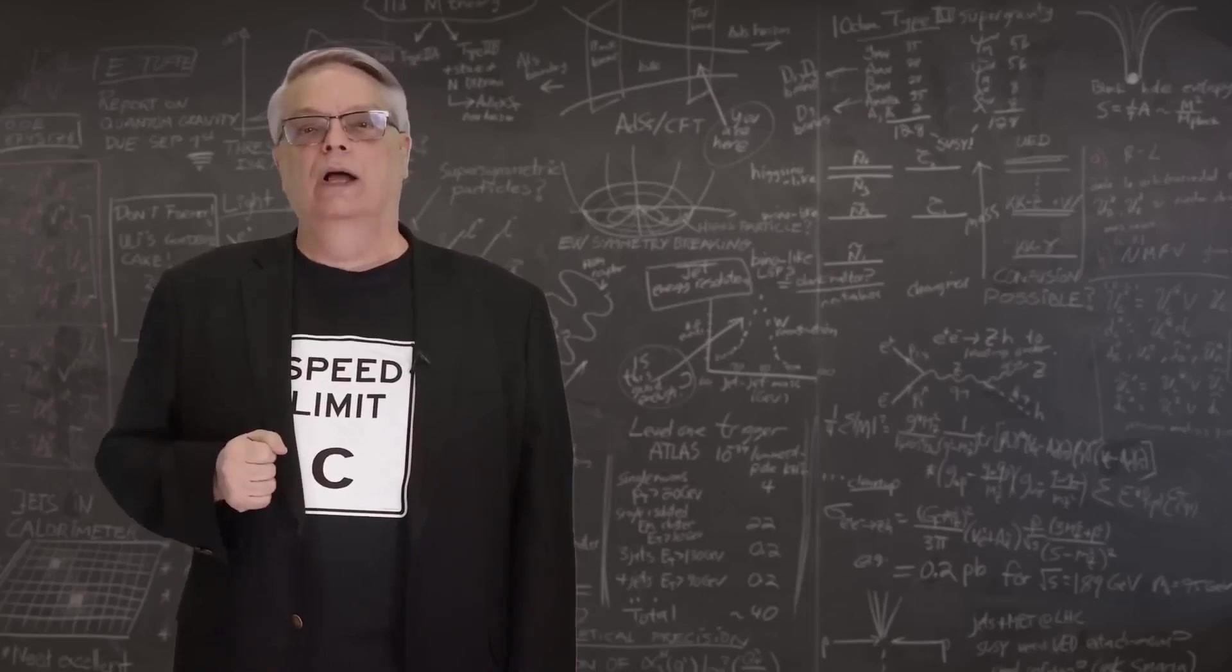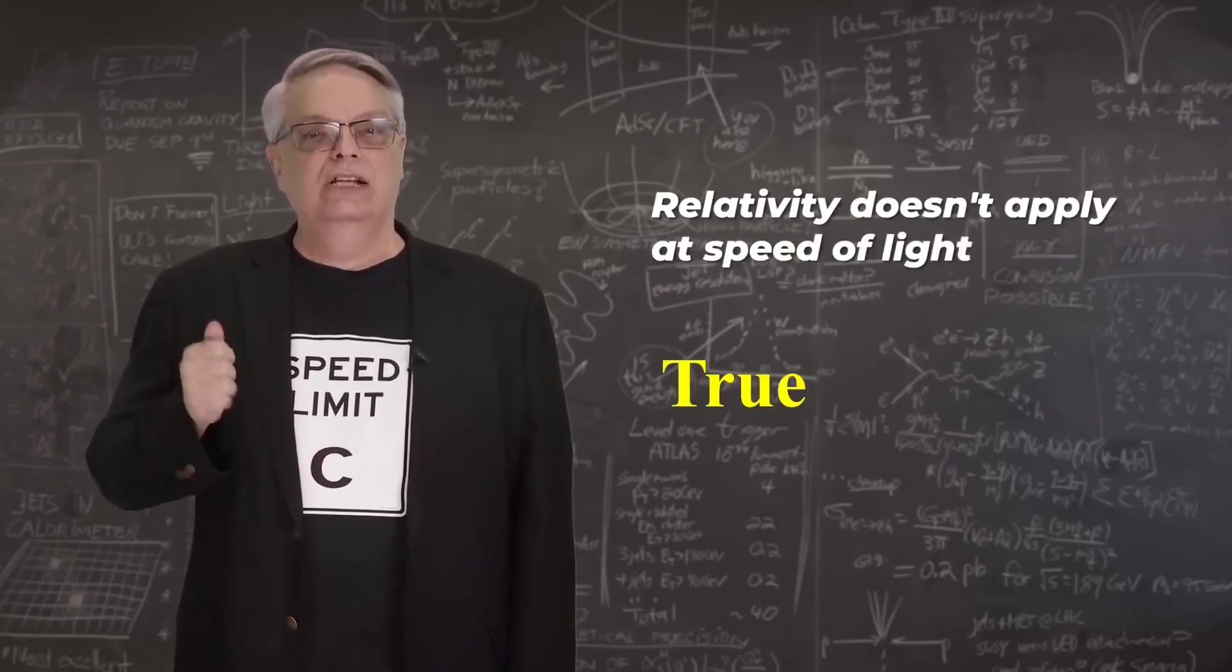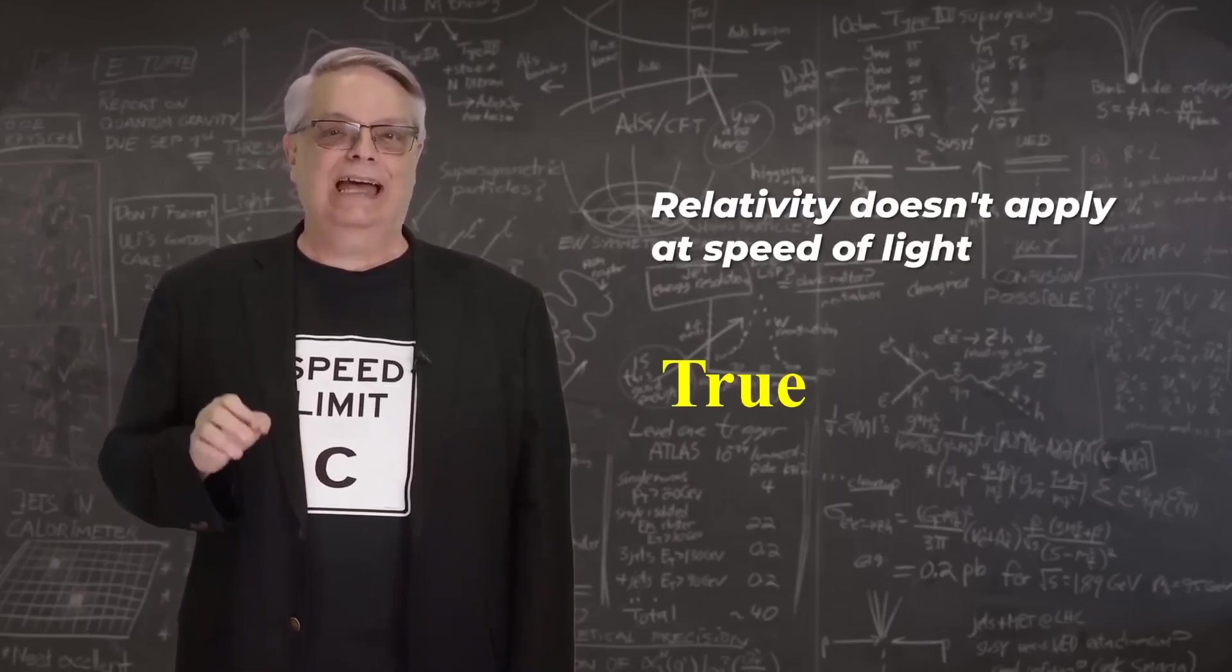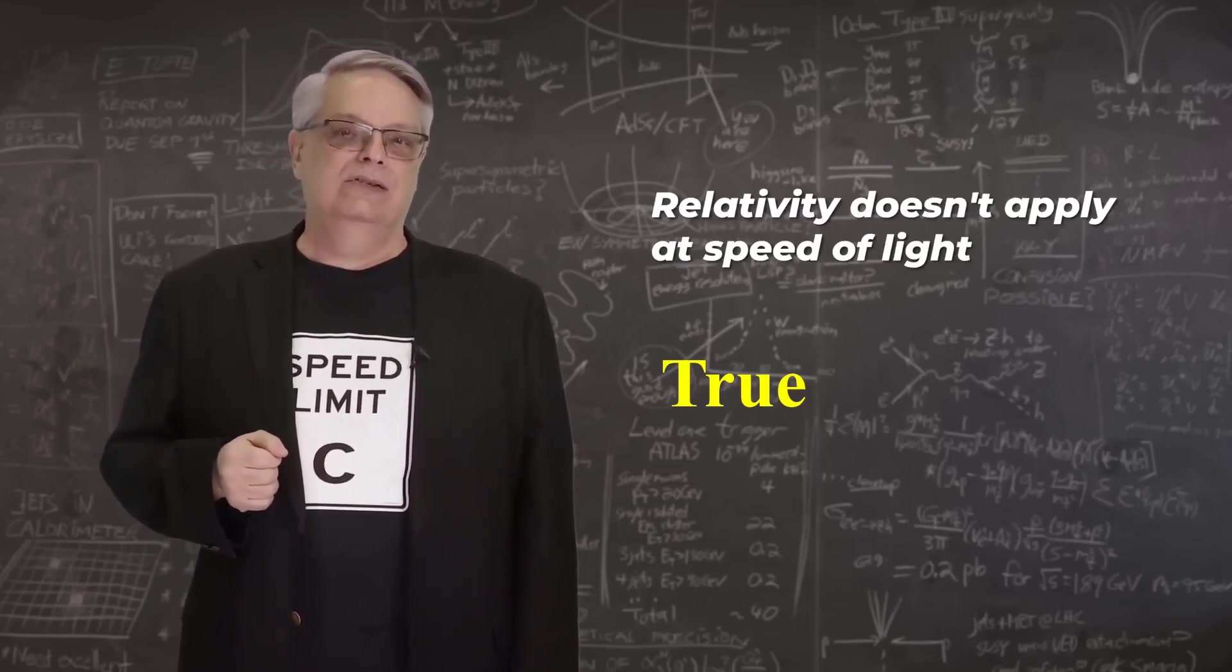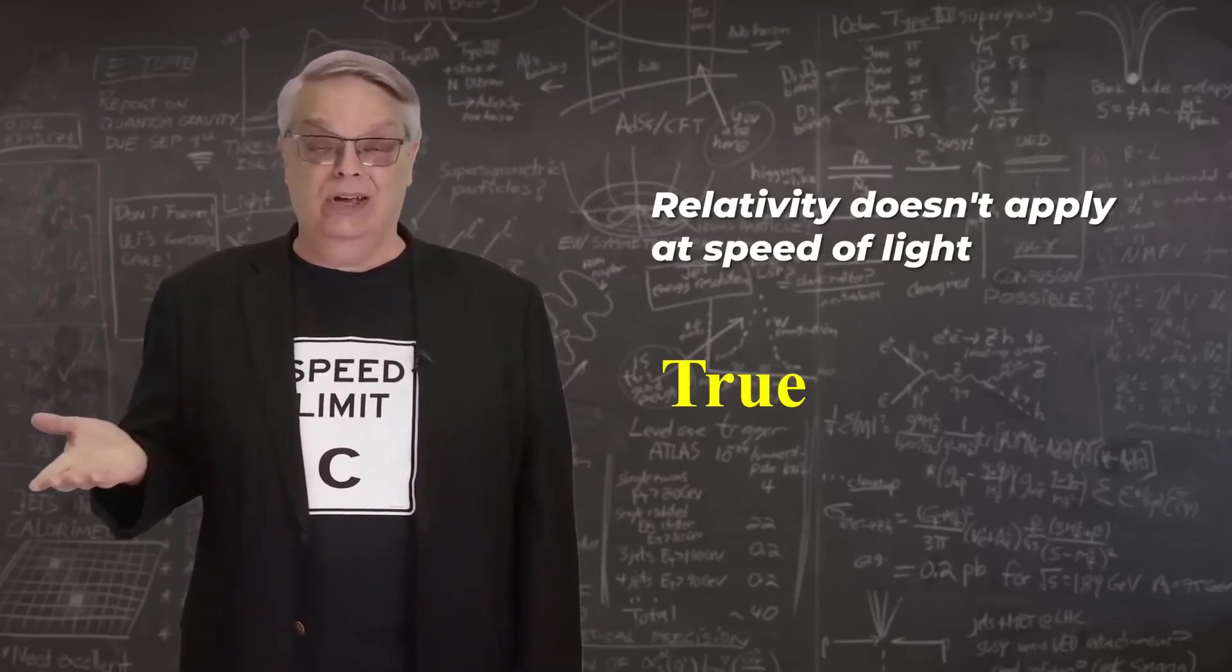So that's the key point number one. The equations of relativity don't work for objects traveling at the speed of light. That means that relativity theory also fails for photons.